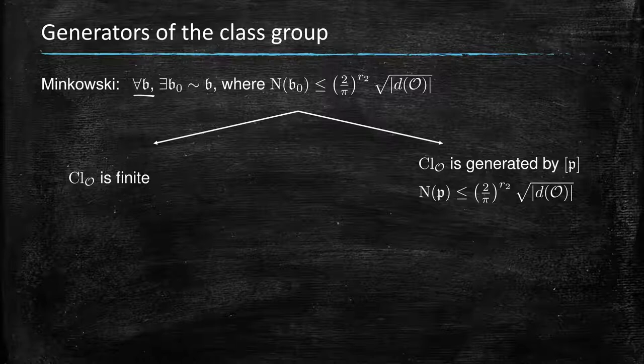...B_0 of norm, so in the same class (we denote being in the same class by this equivalent sign because it's an equivalence relation), with the norm of B_0 bounded by those invariants of the ring in which we're calculating the class group. So that means that by unique factorization into prime powers of ideals, then the class group must be finite because there's only so many B_0s with that property.